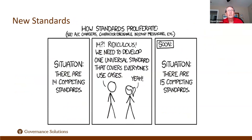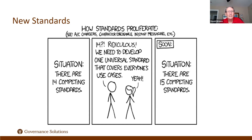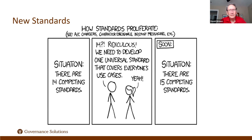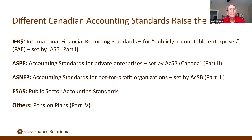One of the things that has complicated life in the last few years and raised the bar in financial literacy is changing accounting standards. This cartoon is meant to illustrate: back in 2011, Canada was debating whether to adopt the international financial reporting standards from Europe. The situation shows 14 competing standards, someone says we need a universal standard — and as soon as you introduce the new standard, you now feel like you have 15 competing standards instead of getting rid of the 14 you had before.